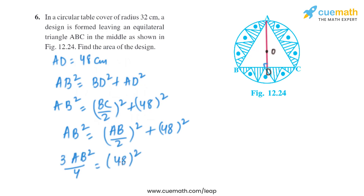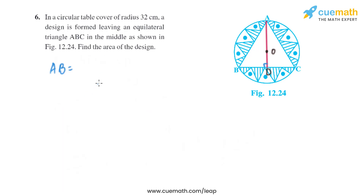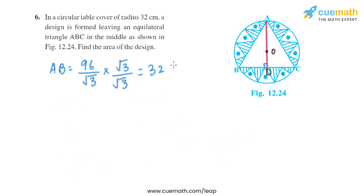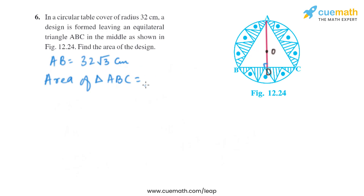Solving this, we get 3AB²/4 = 48², so AB² = (48² × 4)/3. Further solving gives AB = 96/√3 centimeters. Rationalizing by multiplying top and bottom by √3, we get AB = 32√3 centimeters. That is the side of the equilateral triangle.